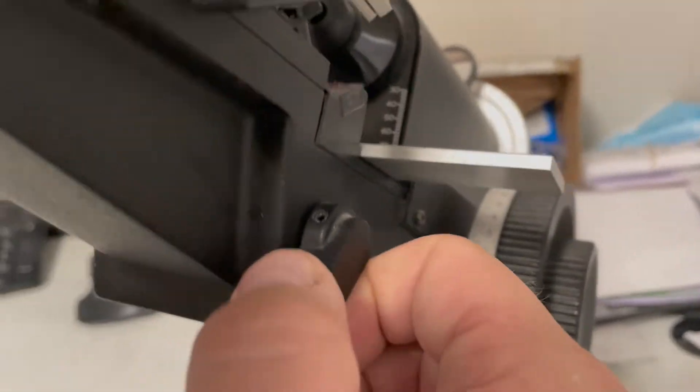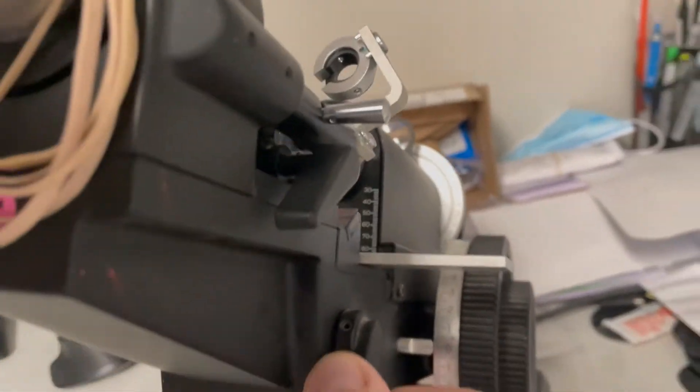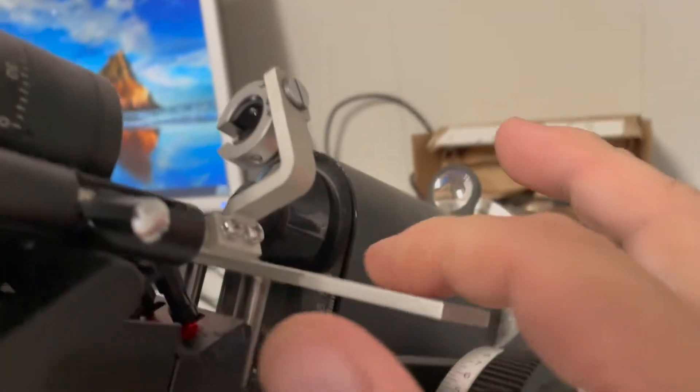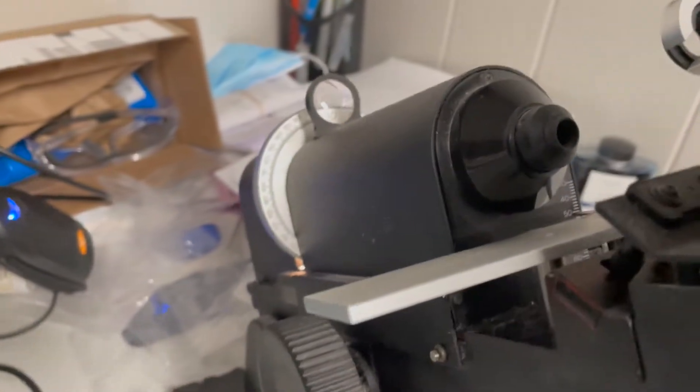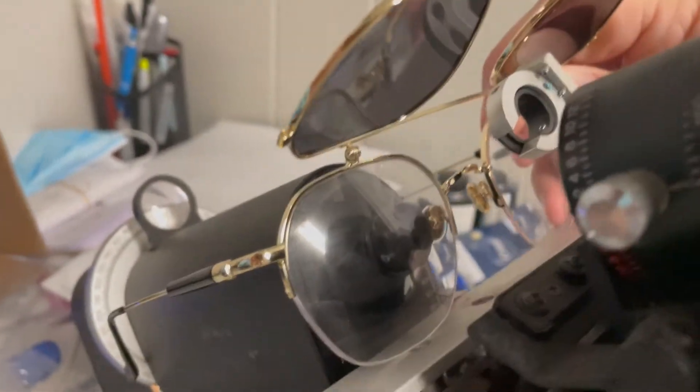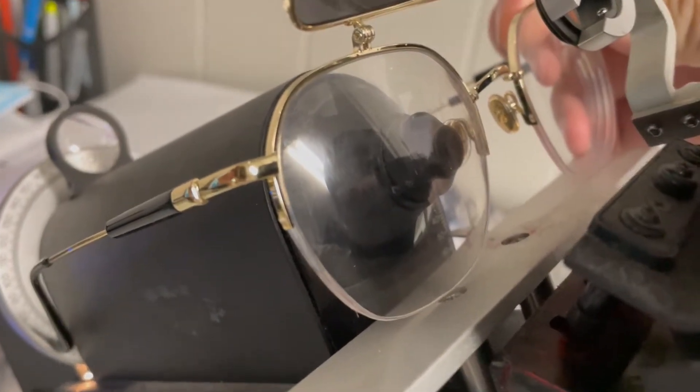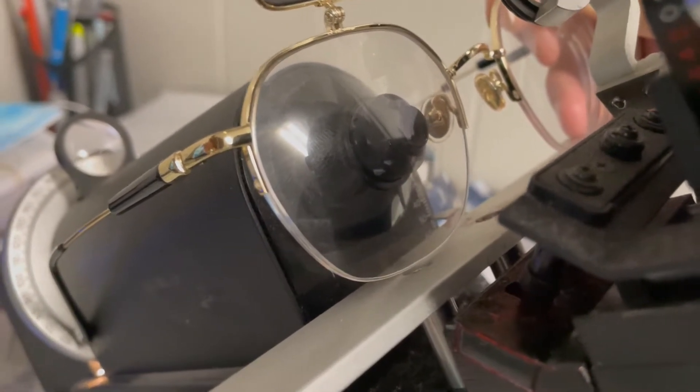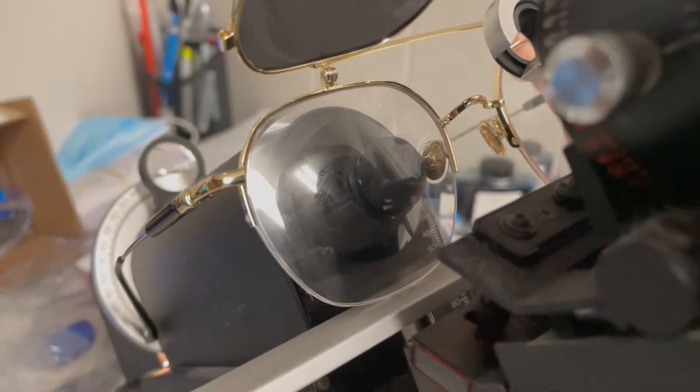Okay this lever right here raises and lowers the table and what you use this for is to put your frame on there so that way you have a nice even surface. This is not a good frame to show this but just to give an example. The idea is to have both sides of the frame touching that table so you're able to get a true 180 reference. That way when you go to check the axis you can tell whether it's on or off.